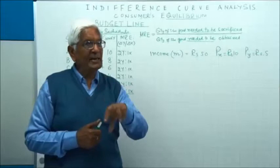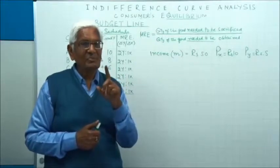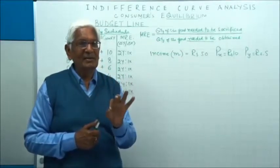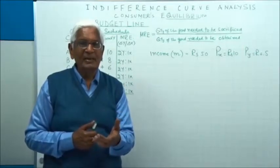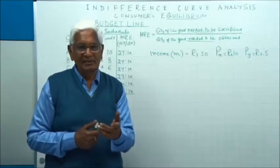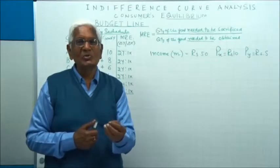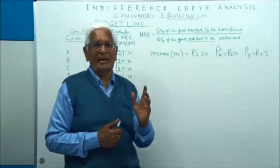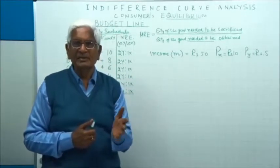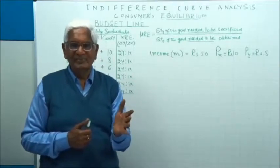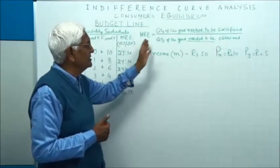Earlier we had MRS — the Marginal Rate of Substitution. Here it is the Market Rate of Exchange. In the market, exchange happens: if the consumer wants one unit of X, he has to reduce his purchases of Y by two units. This is what we call the market rate of exchange, and this is based on the assumption that he spends his entire income.